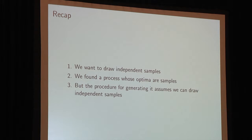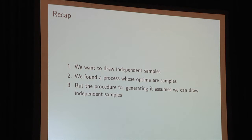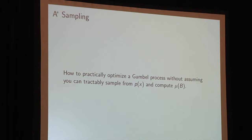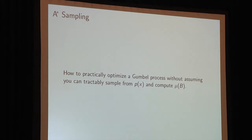Let's step back and recap. We wanted to draw independent samples. We found a process whose optima are samples, but the procedure for generating it assumes we can draw independent samples — so we need to move beyond that. The second section of the talk addresses how to practically optimize a Gumbel process without assuming tractable sampling from P of X or the ability to compute volumes mu of B. This algorithm is called A-star Sampling.